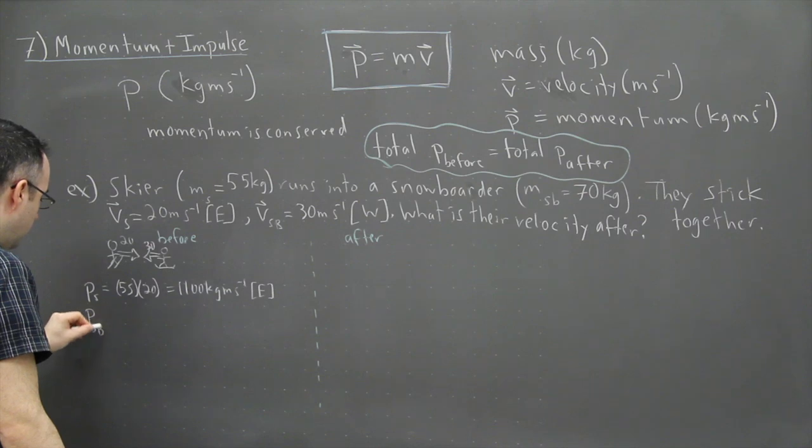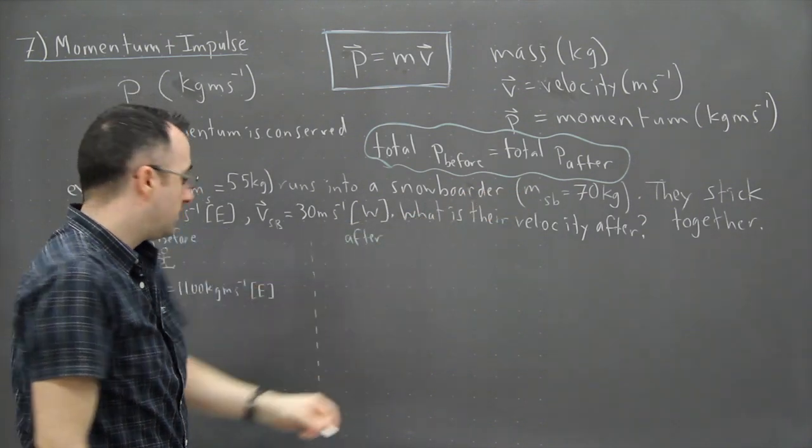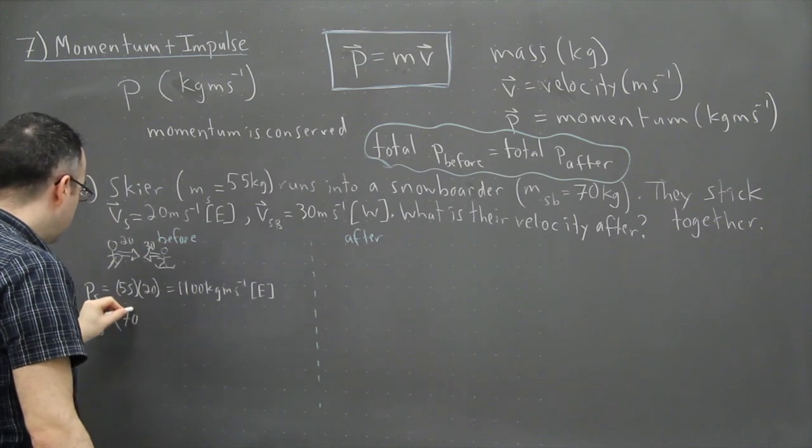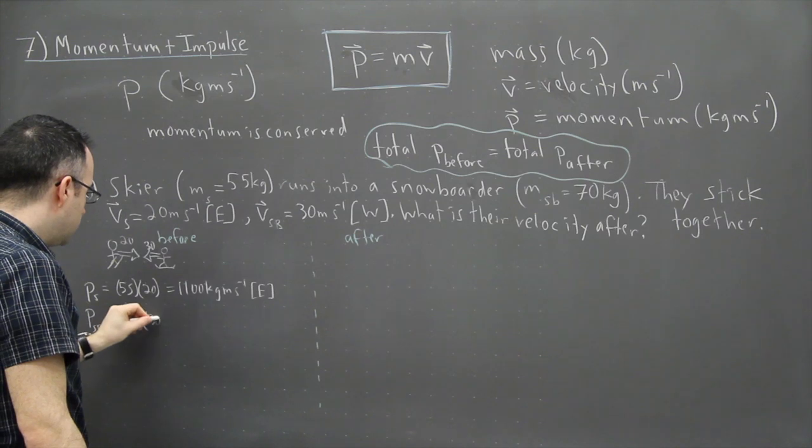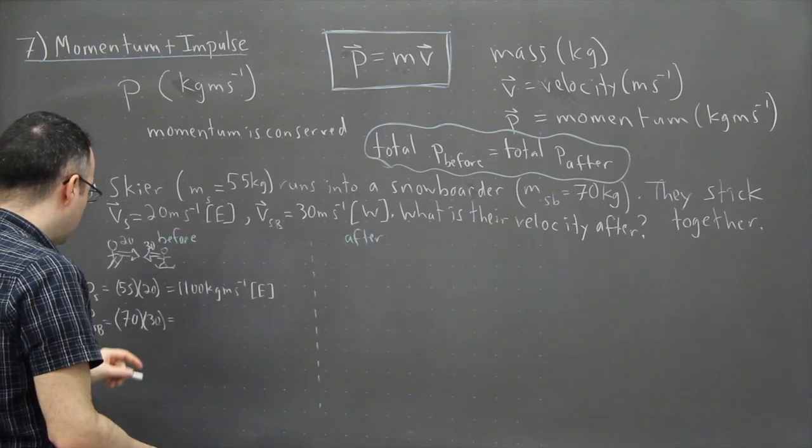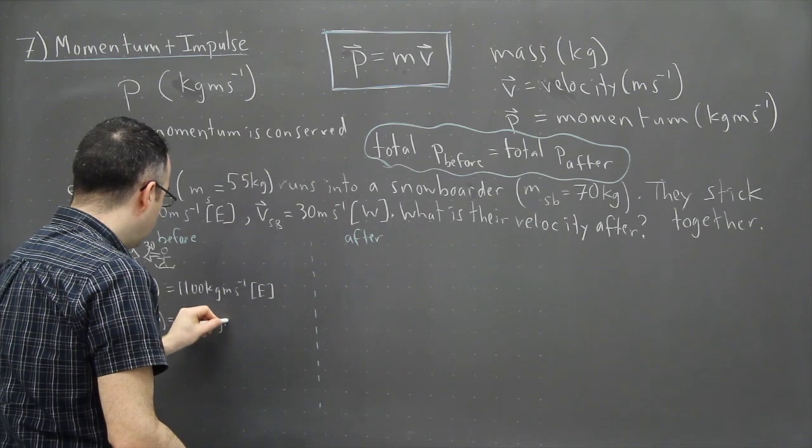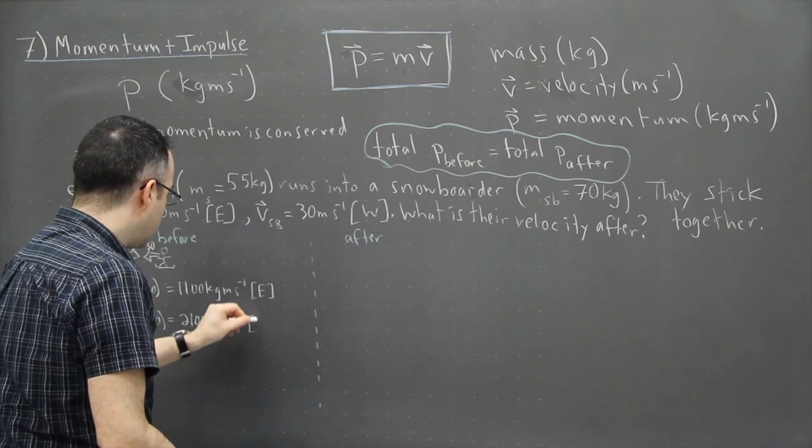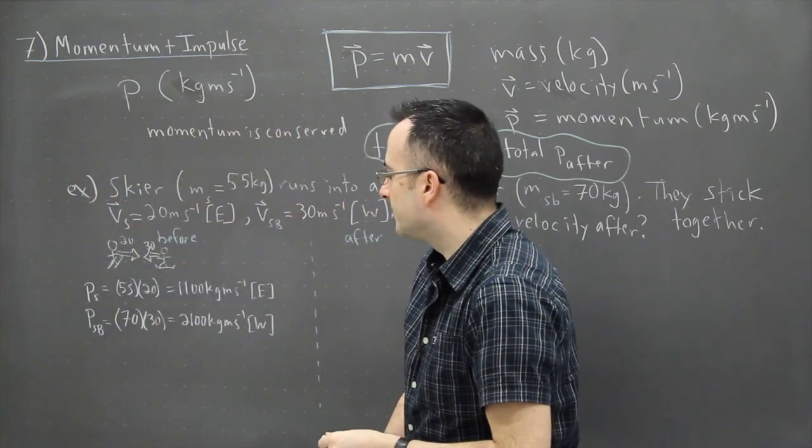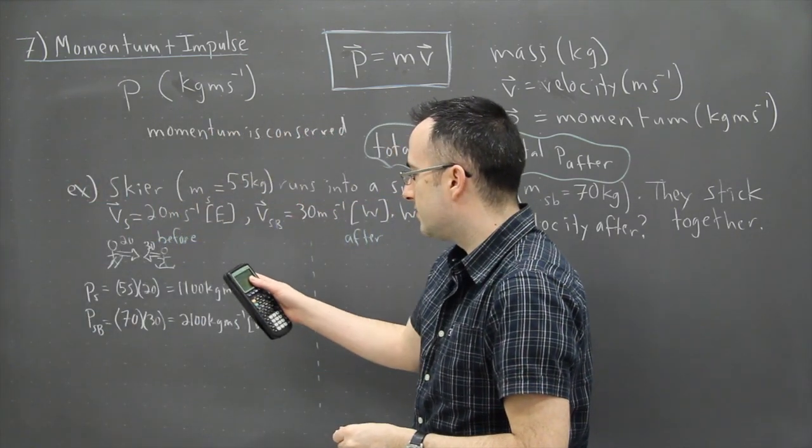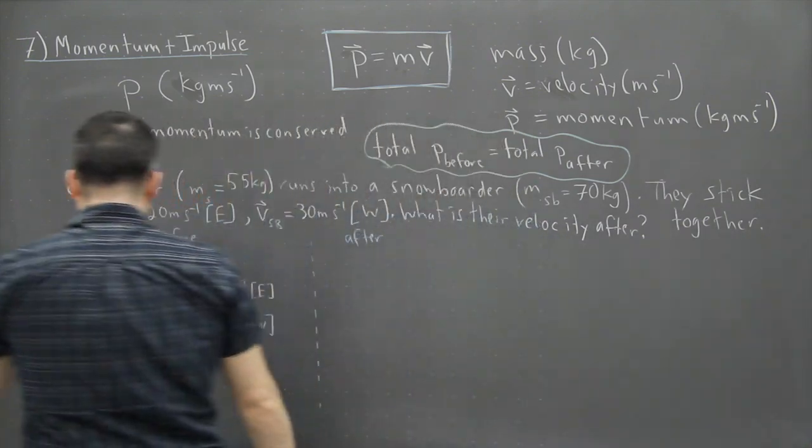Then we have the momentum of the snowboarder, so P_SB. And that's going to be similar here. It's going to be the mass of the snowboarder, which is 70 kilograms. So 70 times the speed of the, or sorry, the velocity of the snowboarder, which is 30. So then we're going to have, well, that's going to be 2100 kilogram meters per second west. See what we have now is we have the momentum of the skier and the momentum of the snowboarder. And that's the momentum of each of them.